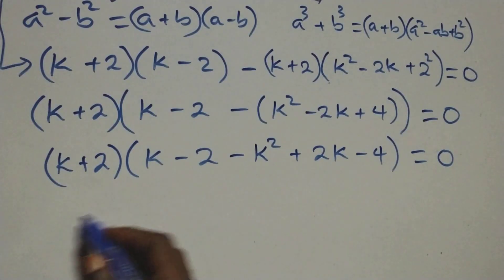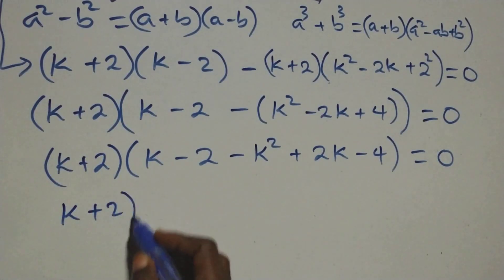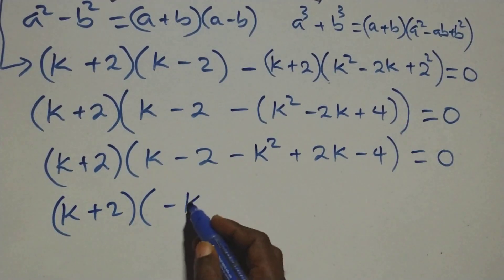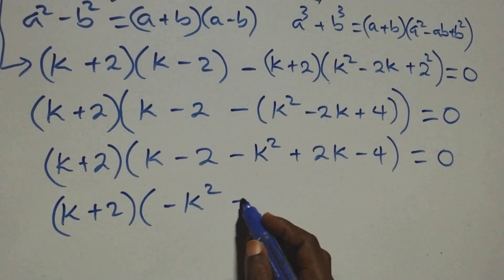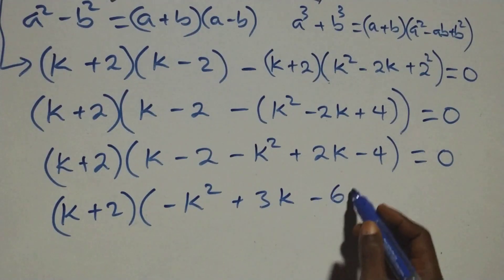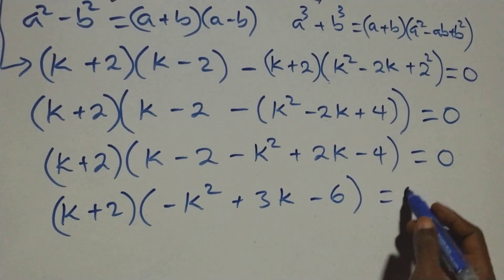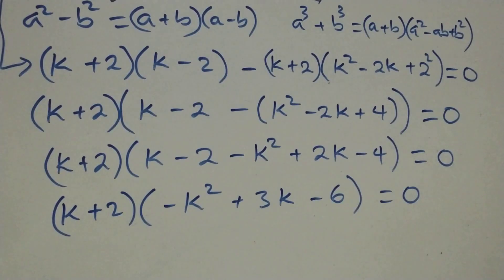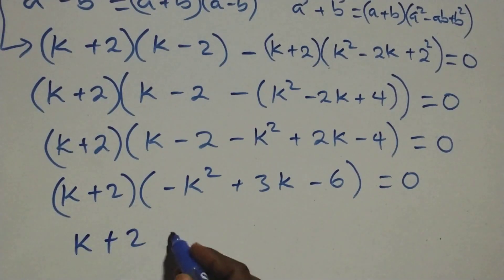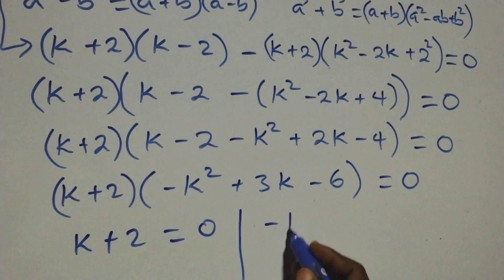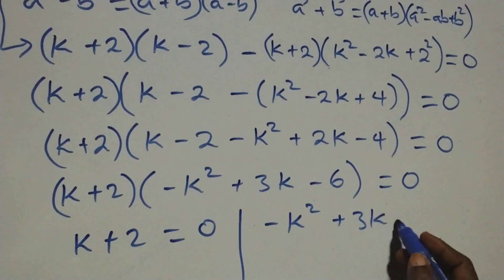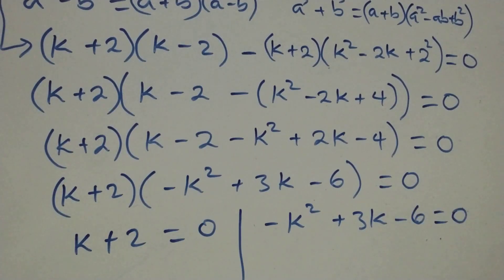Then we rearrange. We have (k + 2) into open bracket: minus k squared, then k plus 2k that's plus 3k, then minus 2 minus, so we have minus 6, close bracket, equals zero. There are two possible cases: the first one, k + 2 equals zero, or we have minus k squared plus 3k minus 6 equals zero.